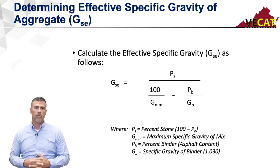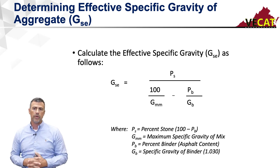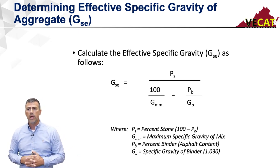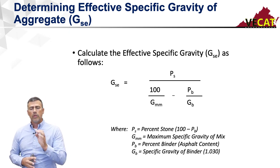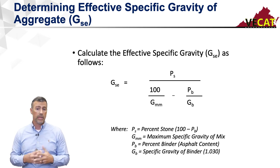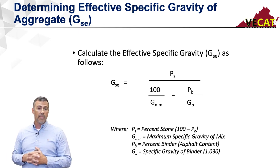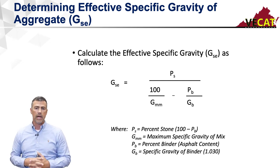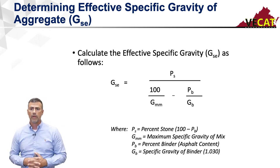The GSE is the effective specific gravity of the aggregate or stone, and here's the formula we use to calculate it. You may notice a very familiar term — the GMM — in our equation. That's our maximum specific gravity we talked about earlier. So when we perform a maximum specific gravity test, we can then calculate an effective specific gravity of the stone for that particular mix. Some other values in the formula: PS is the percent stone. We know the asphalt content typically, and the percent stone is 100 minus the percent binder.